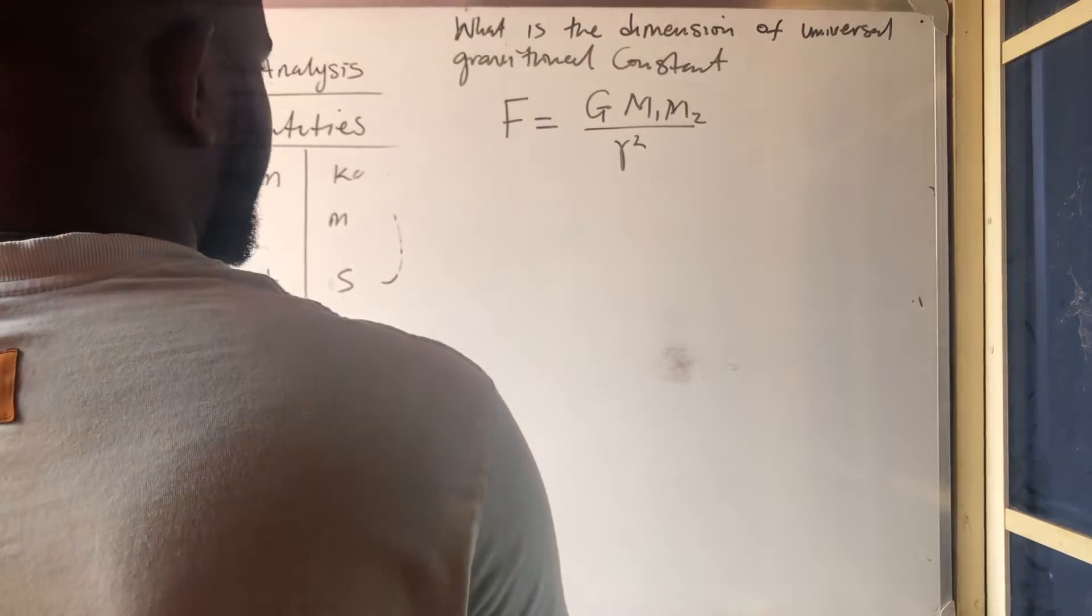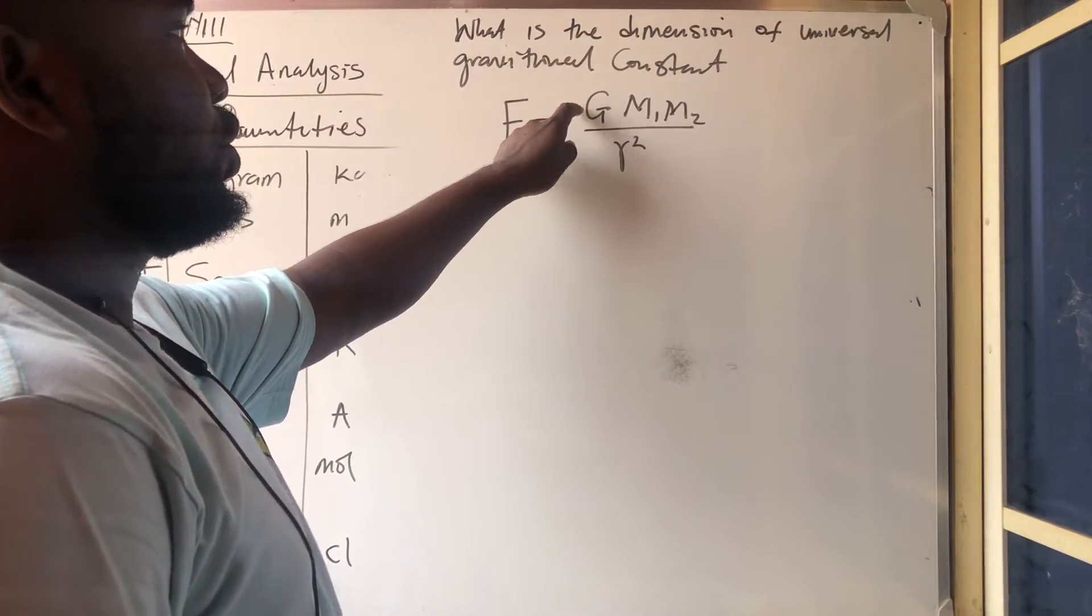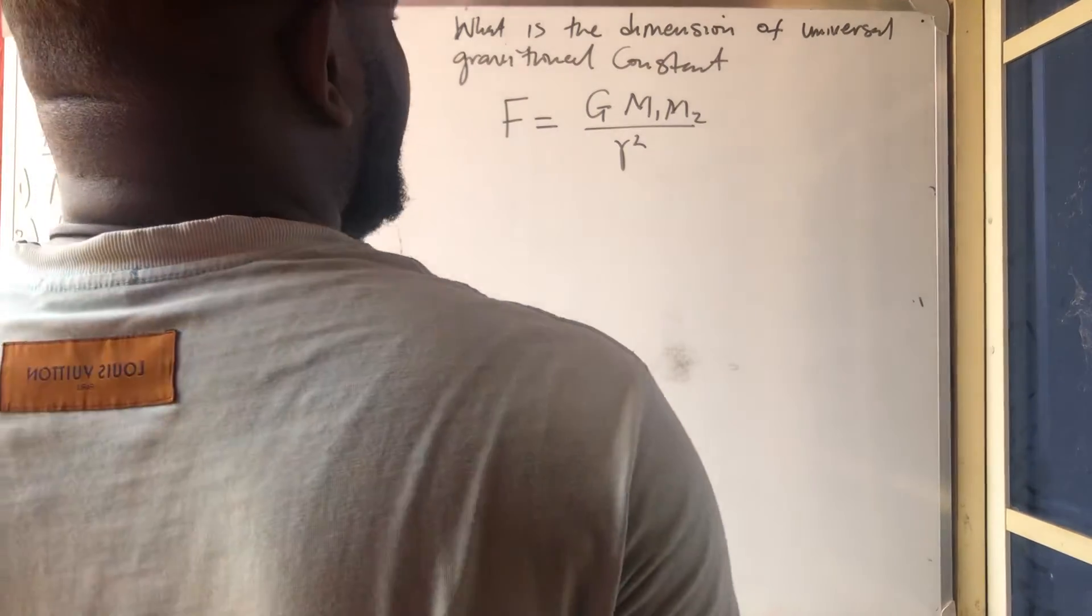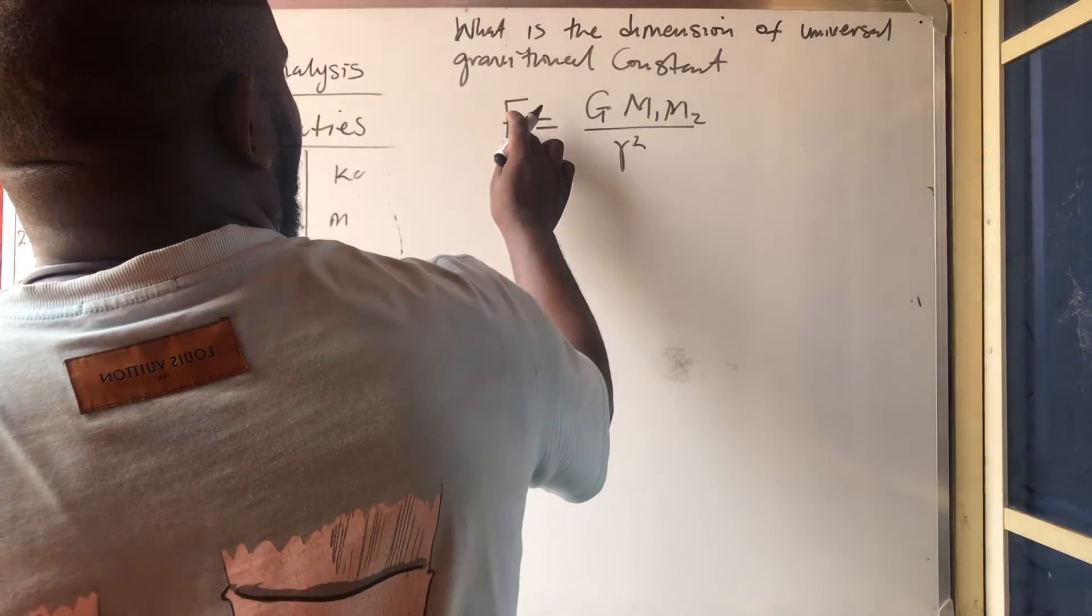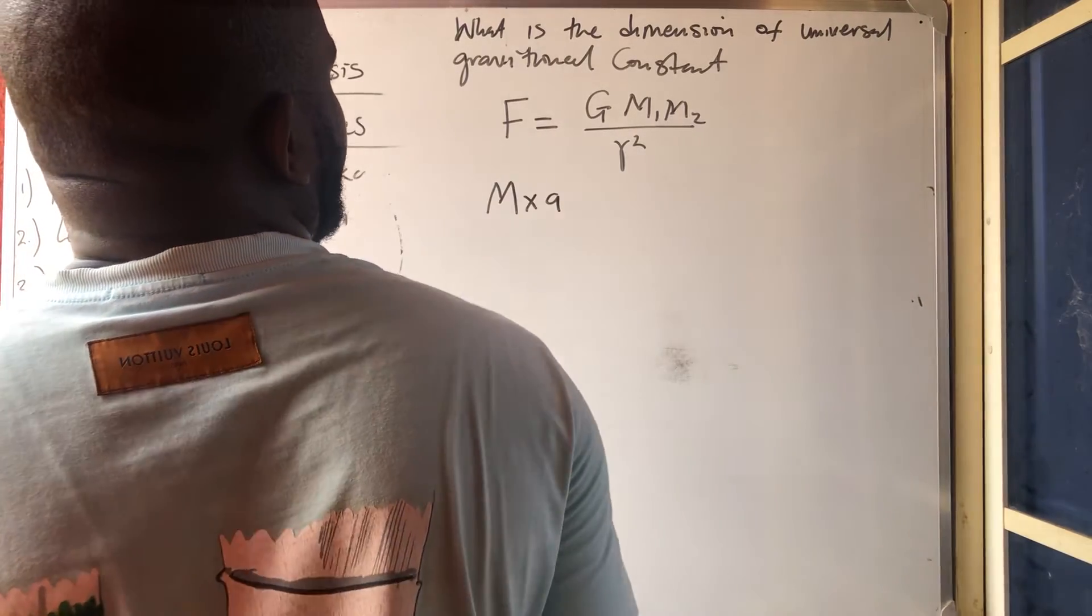So let us get this. We are asked to get the dimension of this G. G is the gravitational constant. We need to get the dimension. So before that, what is our force? Force is what? Mass times what? Acceleration.